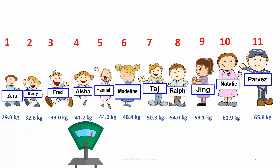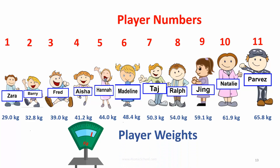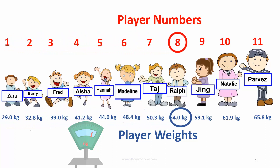Going from lightest on the left to heaviest on the right, Zara is number one and Parvez is still number 11. We can now see two rows of numbers: the player numbers at the top and the player weights at the bottom. The size of both increase going from left to right.